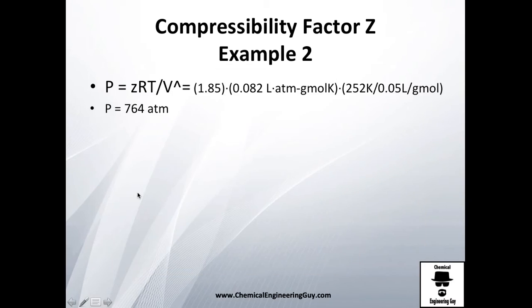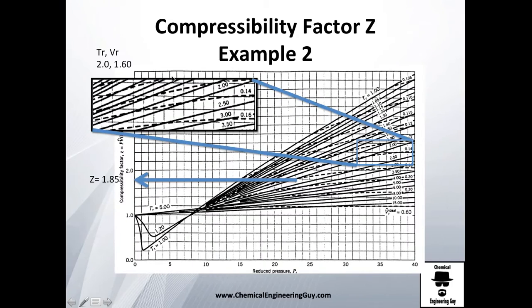Now it's time to go back to calculate the P value. You have the Z value, you have the R value, you have the temperature which is 252 Kelvin, and you got the V real value which is 0.546.